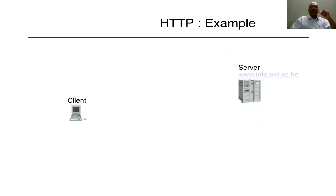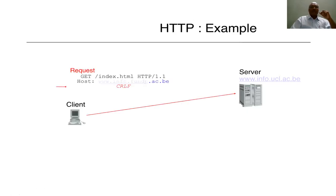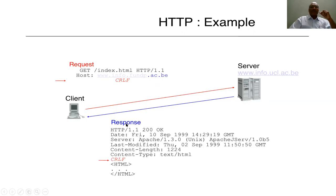Let us see with a specific example how client-server communication is happening with HTTP. The client initiates a request with a method and whatever information is being requested from the server. Here the client is requesting to get the web document index.html using protocol HTTP 1.1, and this information is present on the server info.fundp.ac.be. Once the request is received by the server and the requested file index.html is available, it responds with some additional information.